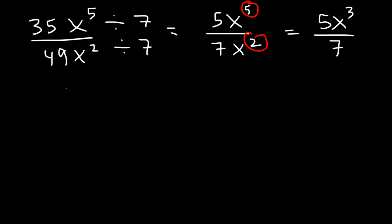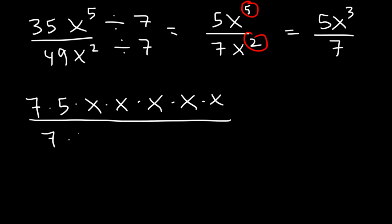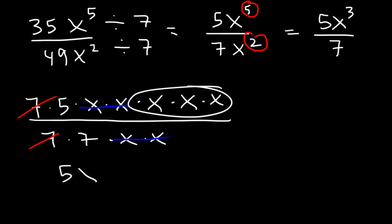You can also see it this way. 35 is 7 times 5. x to the 5th is basically 5 x variables multiplied together. 49 is 7 times 7, and x squared is just x times x. We're focusing on canceling and simplifying. We can cancel a 7 and cancel 2 x variables. So we have a 5 on top, 3 x variables remaining, and a 7 on the bottom — which is why this is the final answer.